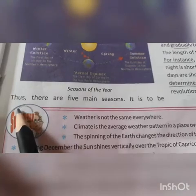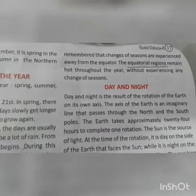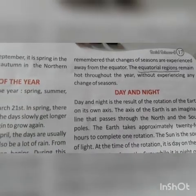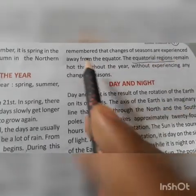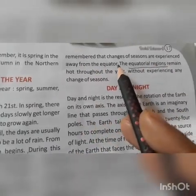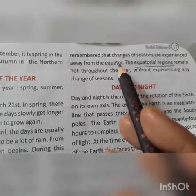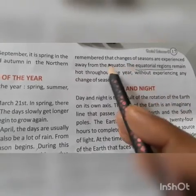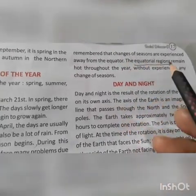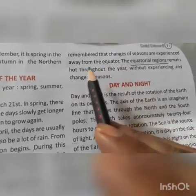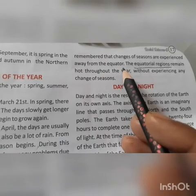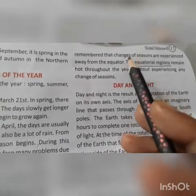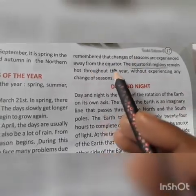Now let's read the chapter. There are 5 main seasons. It is to be remembered that changes of seasons are experienced away from the equator. It means changes of seasons can only be experienced away from the equator.